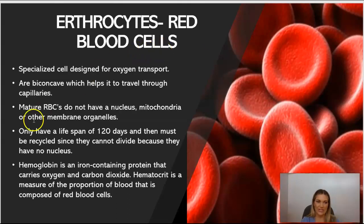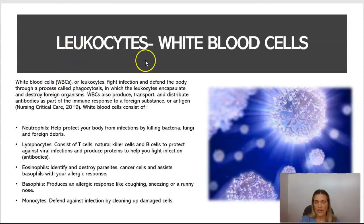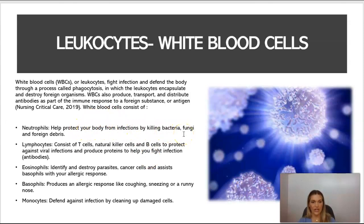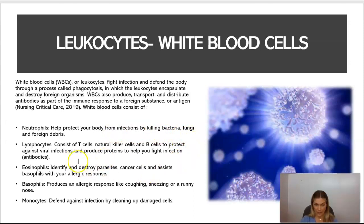Leukocytes are white blood cells. They help fight infection and defend the body through phagocytosis, in which leukocytes encapsulate and destroy foreign organisms. White blood cells also help produce, transport, and distribute antibodies as part of the immune response to a foreign substance or antigen. There are five types of white blood cells: neutrophils, which protect the body from infection by killing bacteria, fungi, and foreign debris; and lymphocytes, which consist of T cells — natural killer cells — and B cells that protect against viral infections and produce antibodies.